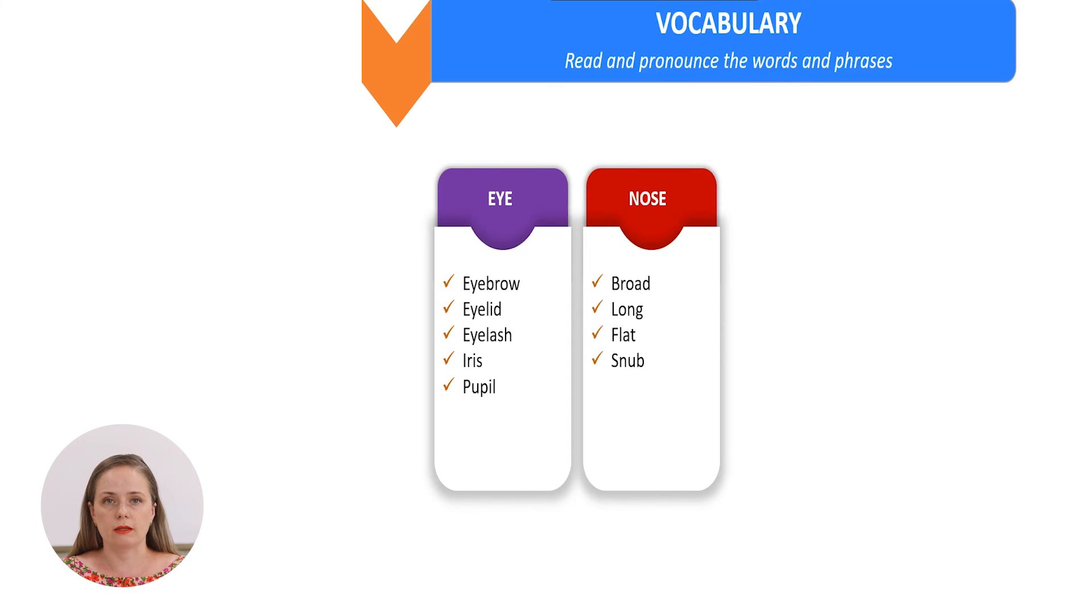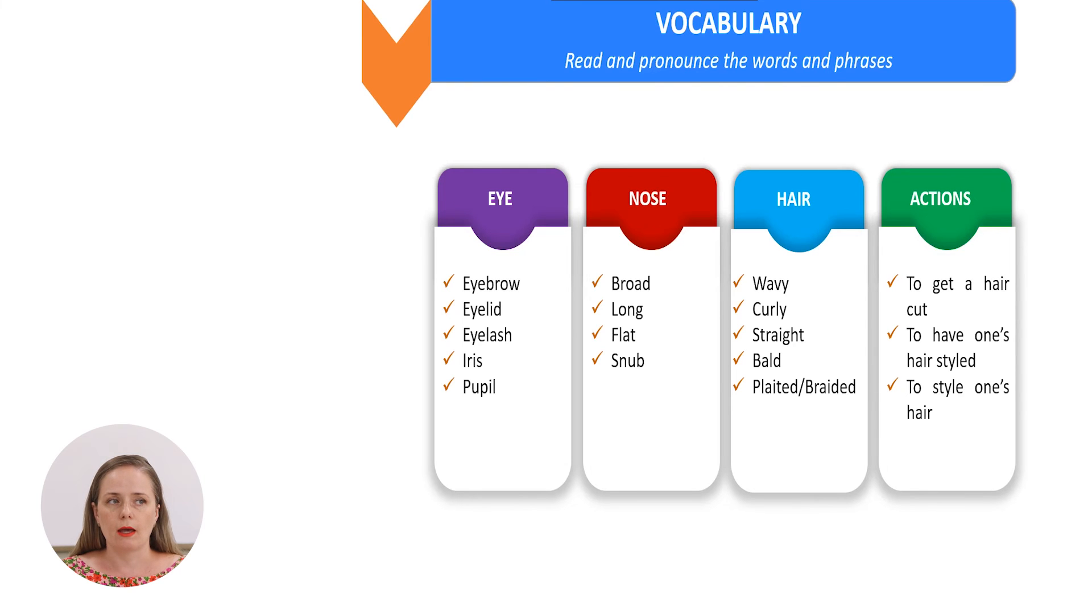If we take the nose, the nose can be broad, it can be long, it can be flat and it can be snub. The hair, it can be wavy, curly, straight, bold and plated or braided. We can have our hair styled, we can get a haircut and we can style our hair.